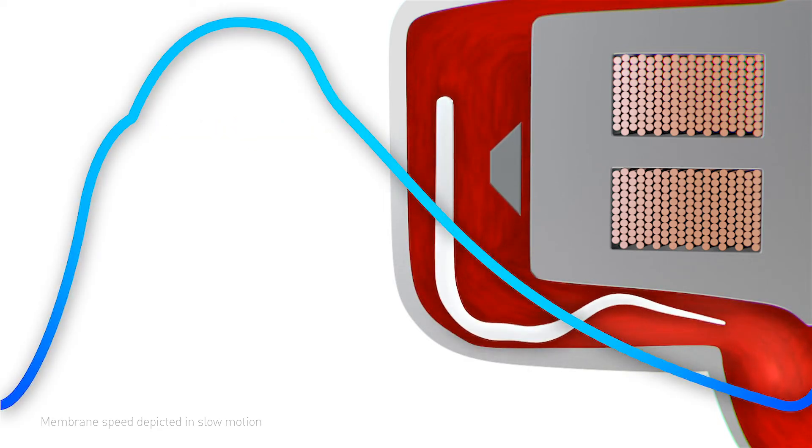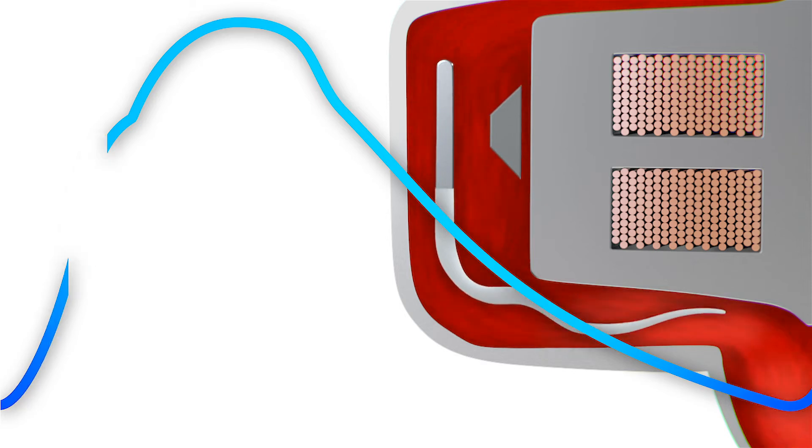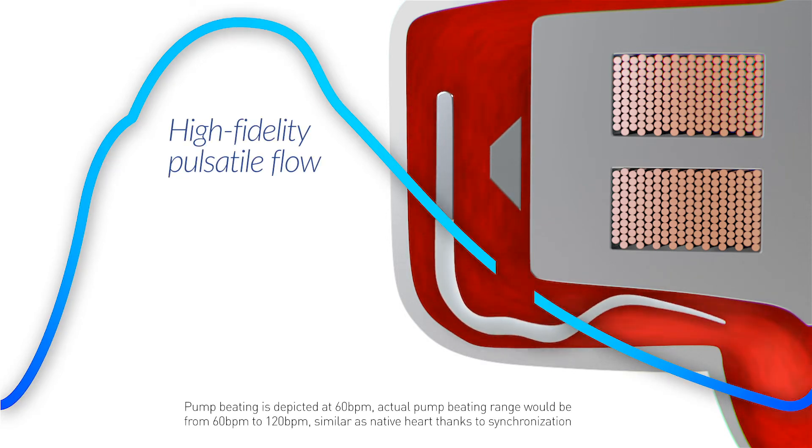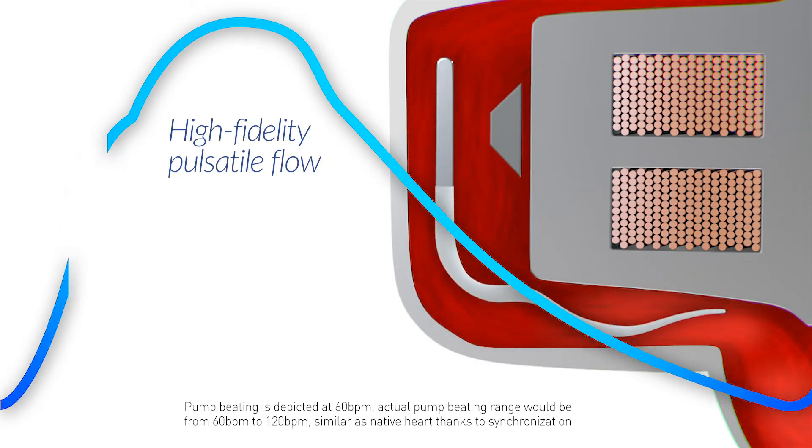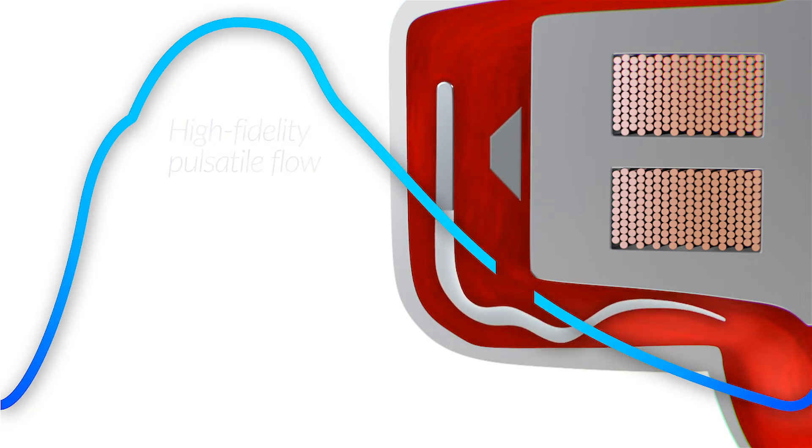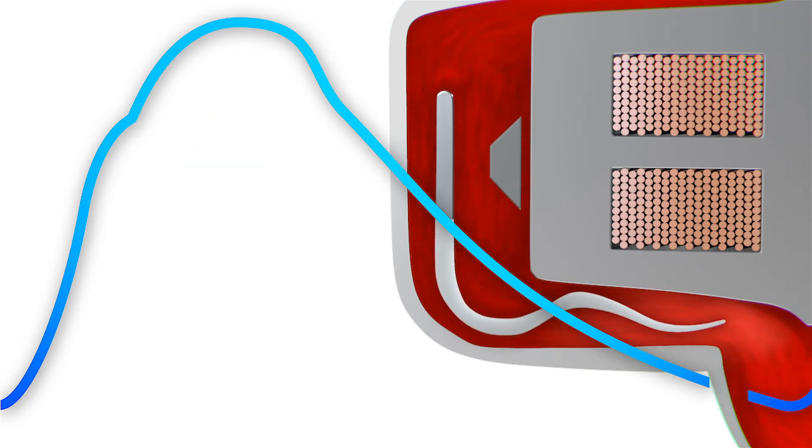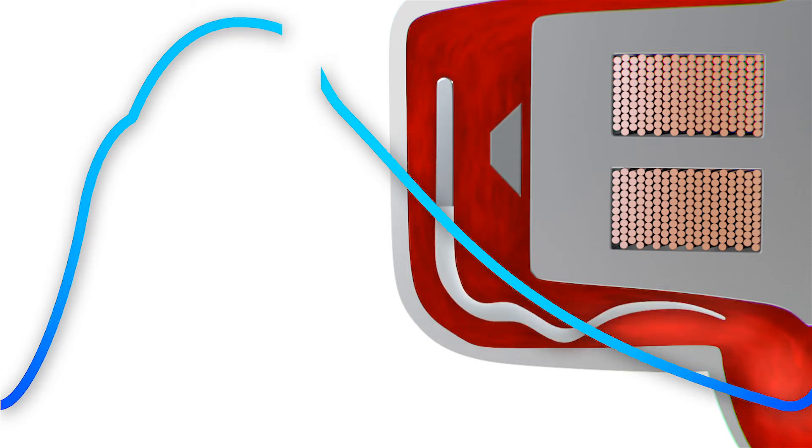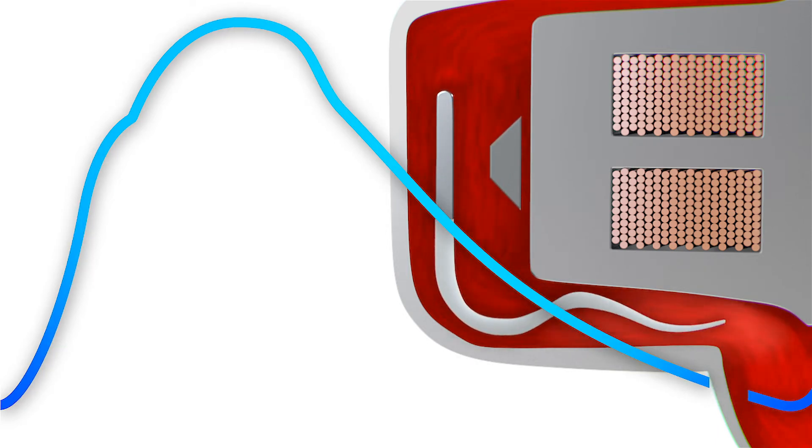Blood cells are traveling at physiologic speeds, generating a high fidelity pulsatile flow similar to the performance of the native heart. CoreWave membrane technology and its unique features mimic the native heart within a compact device.